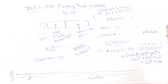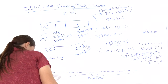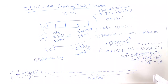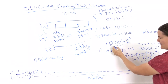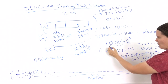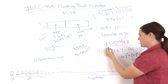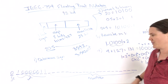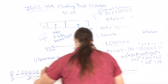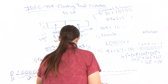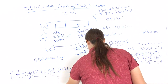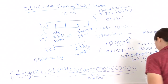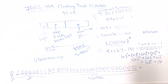Now we can fill in the exponent field: 1, 0, 0, 0, 0, 0, 1, 1. Then we fill in the mantissa. Remember, the leading 1 is not stored because we assume it's always there. So we just store the fractional part: 0, 1, 0, 0, 1, and then the remaining 18 bits are all zeros.